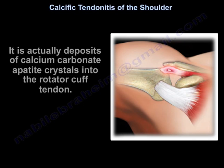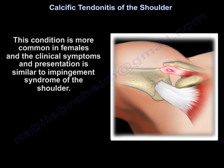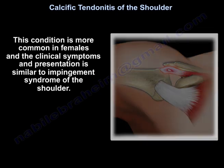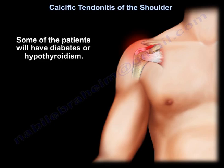It is actually deposits of calcium carbonate apatite crystals into the rotator cuff tendon. It is more common in females, and the clinical symptoms and presentation are similar to impingement syndrome of the shoulder. Some of the patients may have diabetes or hypothyroidism.